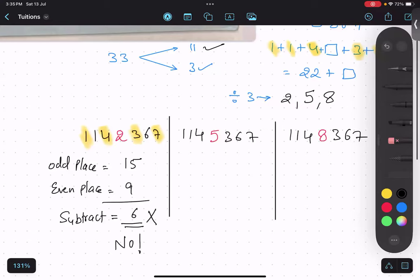So we'll do the same procedure for the next number. Odd places again 15. Even places: 6 plus 5 is 11, plus 1 then 12. If I subtract, I get 3, and 3 is not divisible by 11, so no.